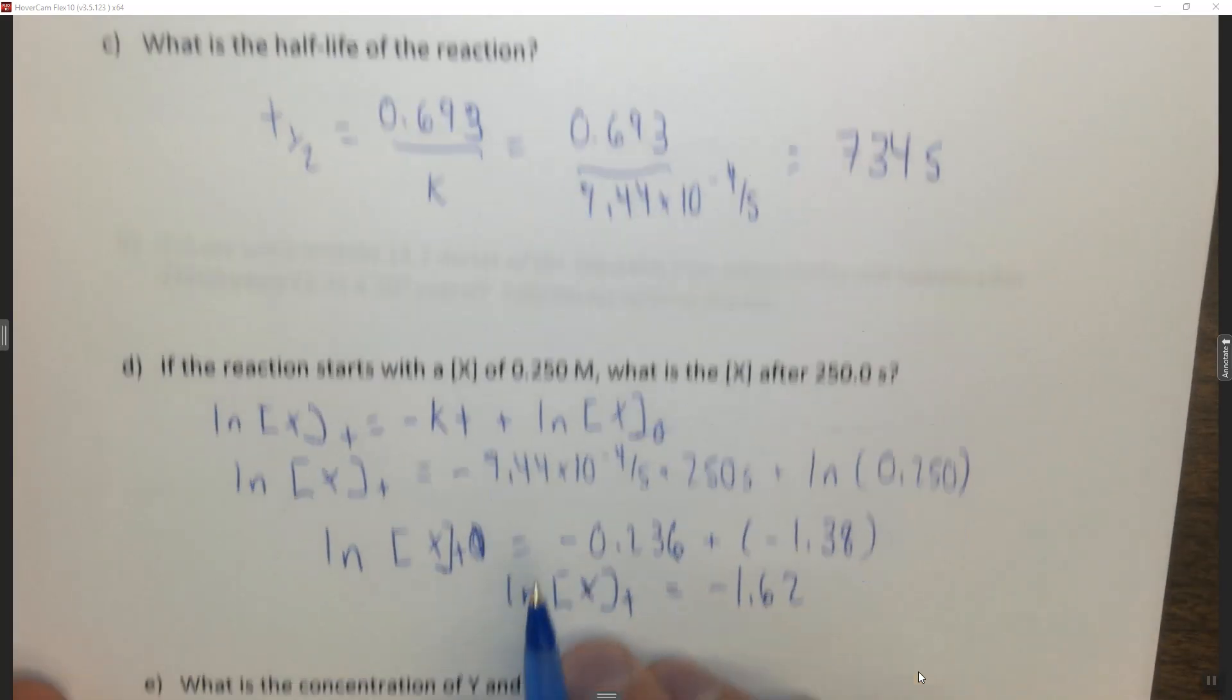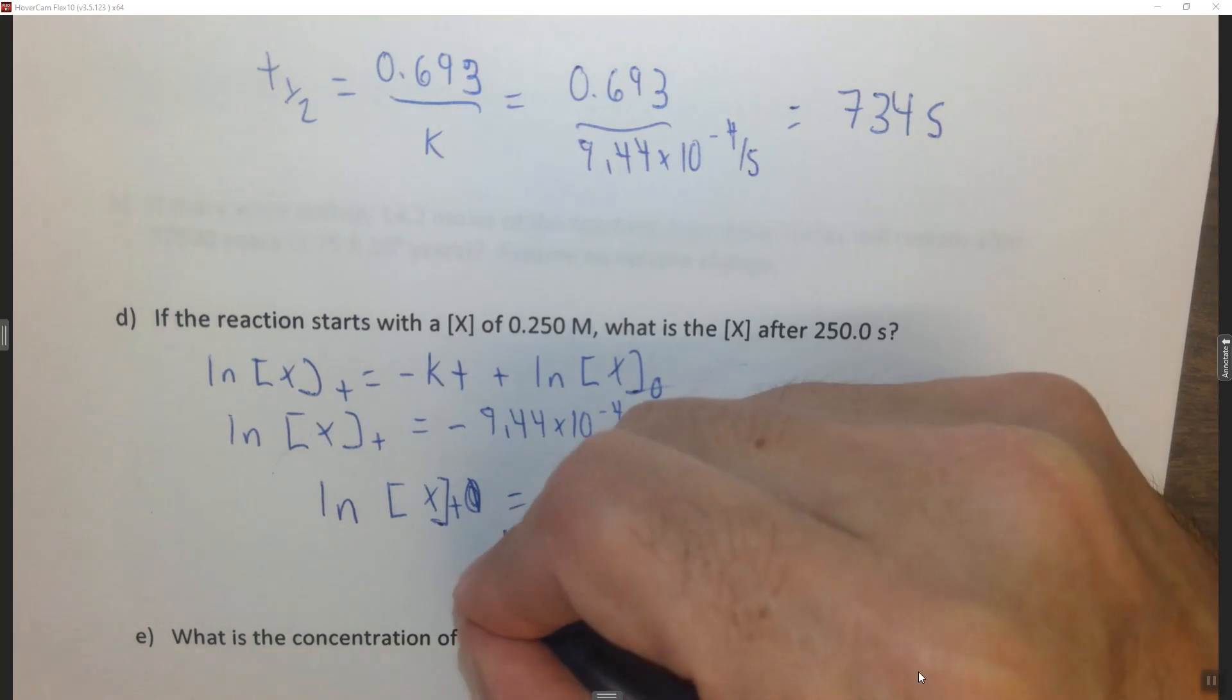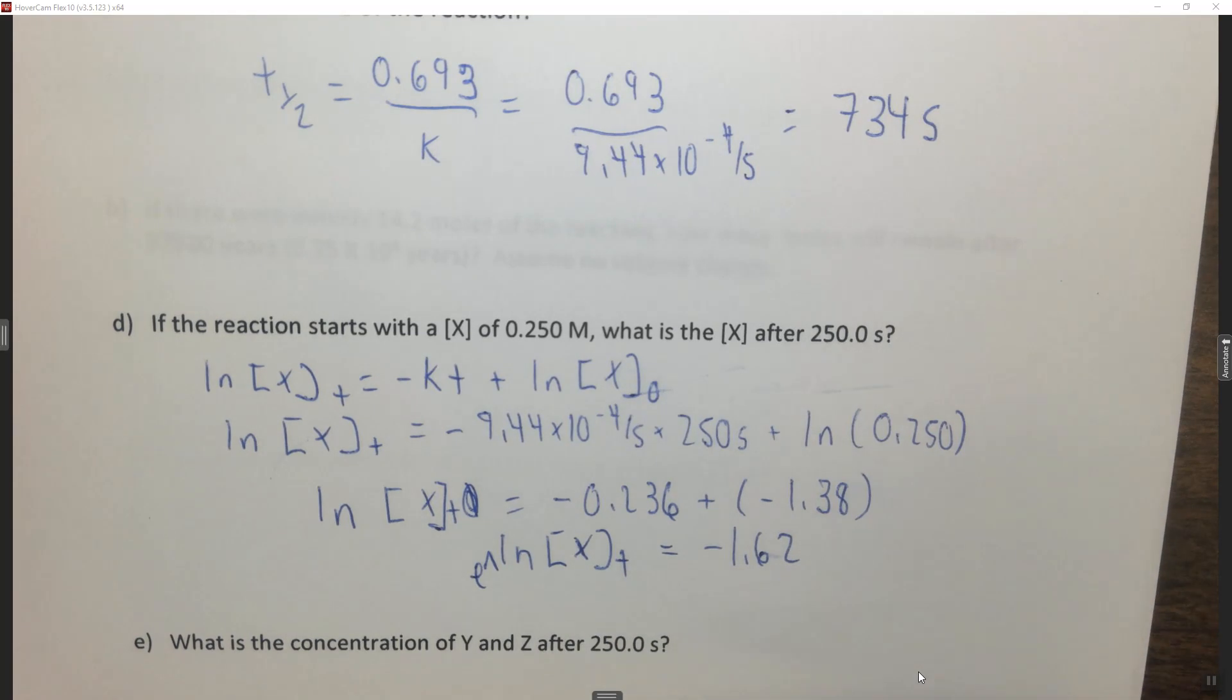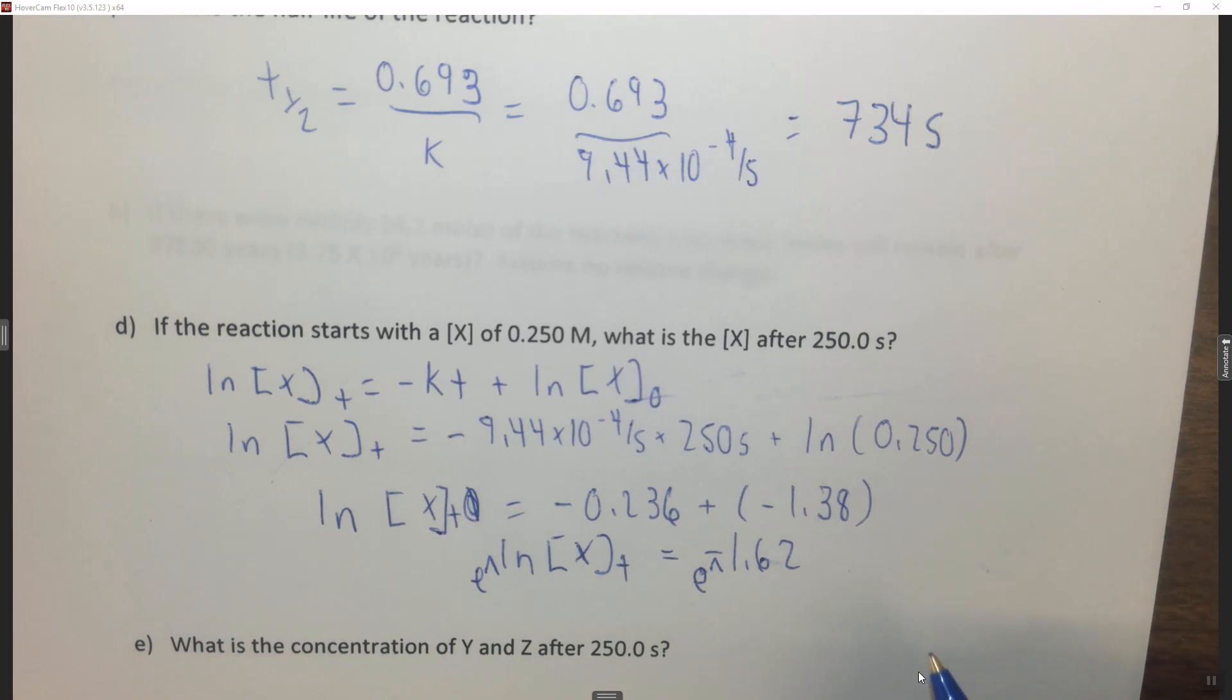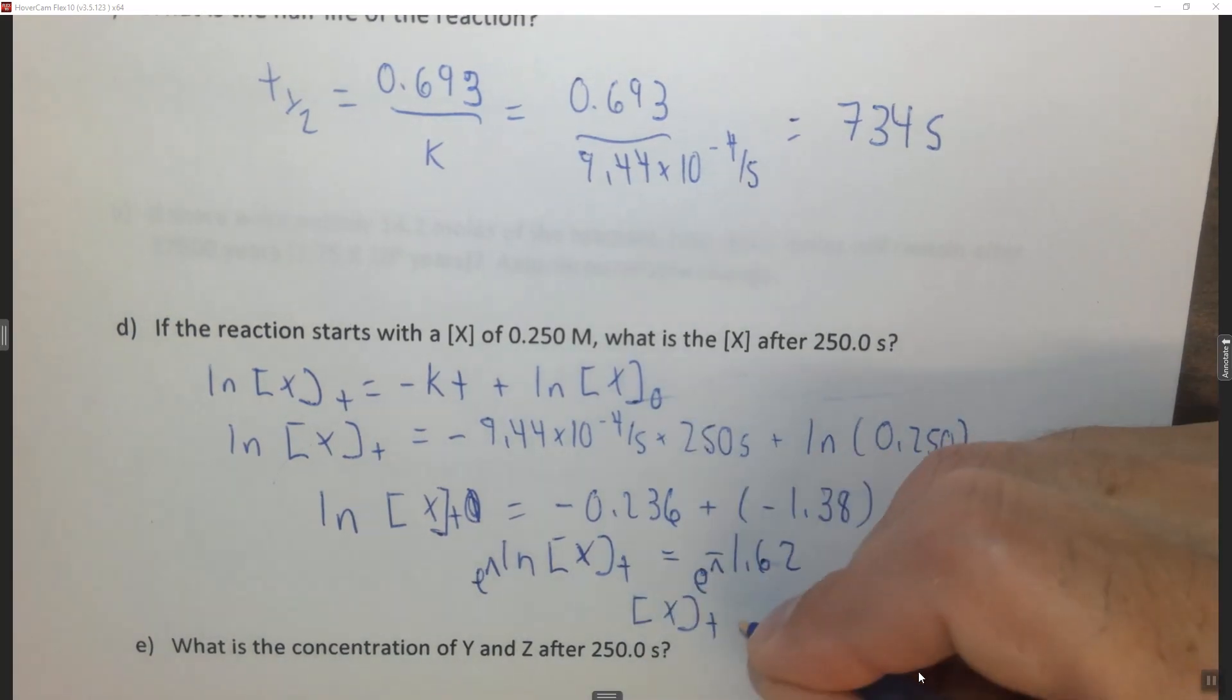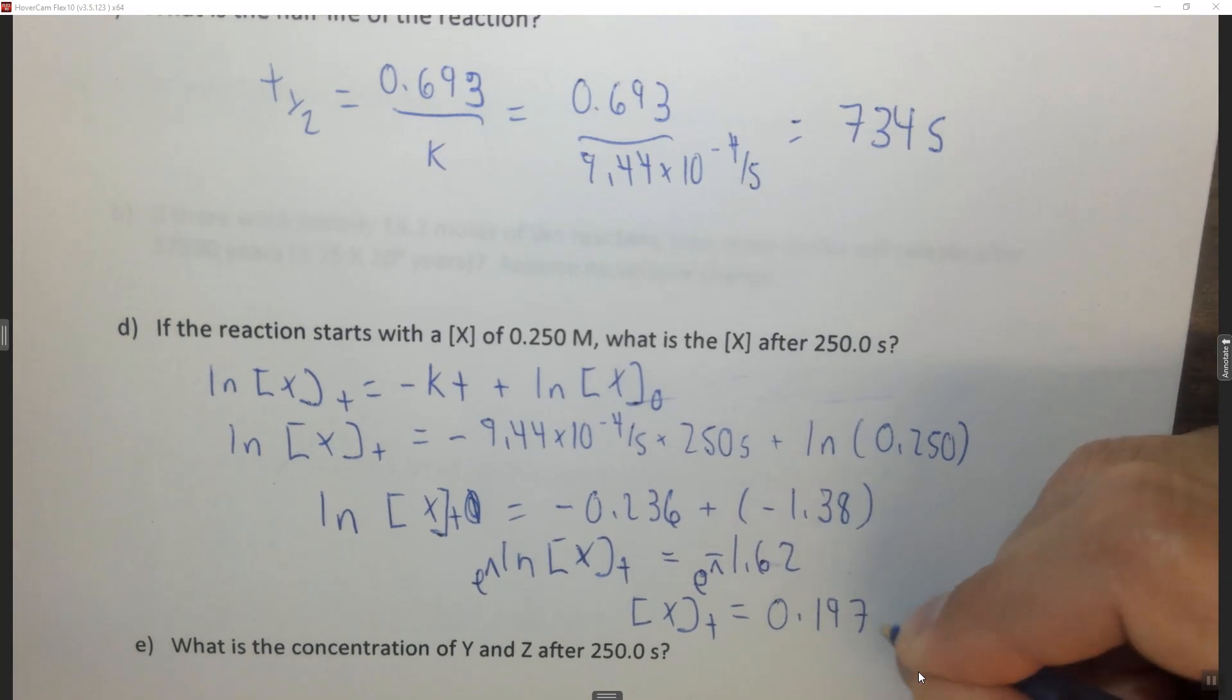So now we need to get rid of this natural log. To get rid of the natural log, you take e to this. On a lot of calculators you hit the shift button or the second button and hit the ln, so it's above the ln, and then you take e to this. It has to be negative, make sure it's negative or you won't get the right answer, and you find that the concentration of x after some time is equal to 0.197 molar.